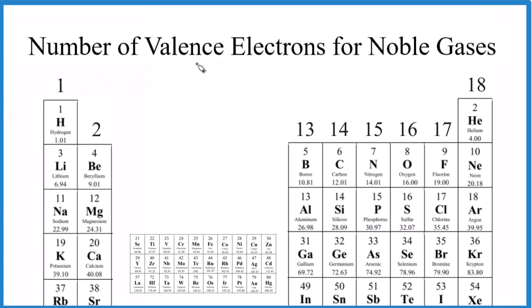So we want to look at the number of valence electrons for the noble gases. And the first thing you need to know, noble gases are in group 18. So these right here, these are the noble gases. They're in the last group here on the periodic table.